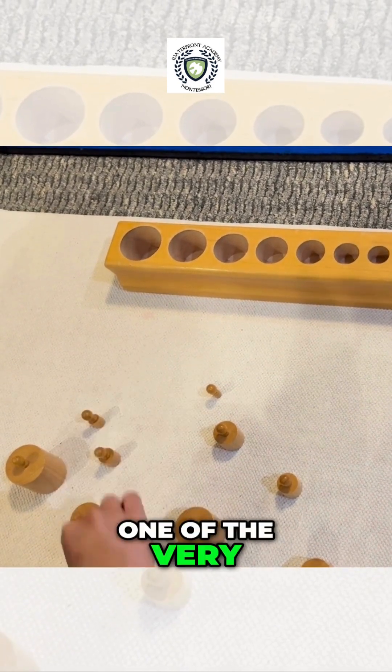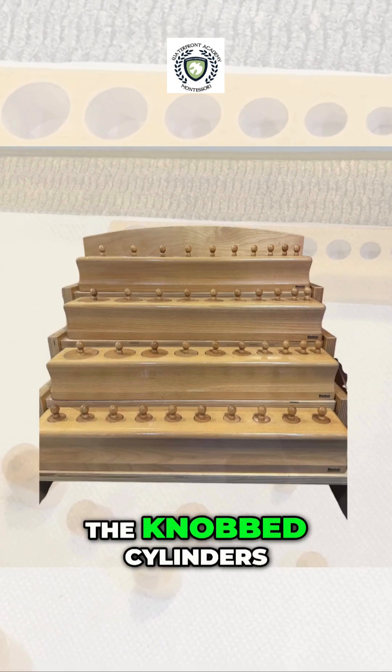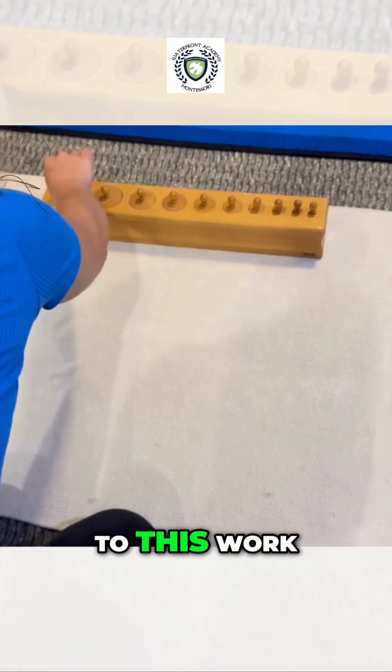Today, we're going to explore one of the very first sensorial materials children encounter: the knobbed cylinders. Let's see how a child might be introduced to this work.